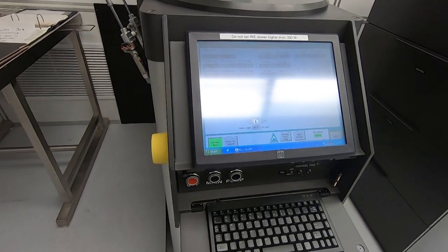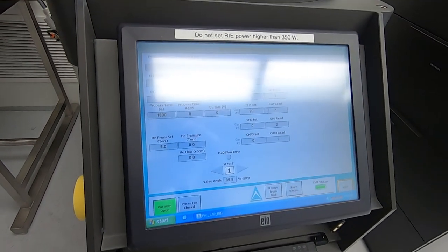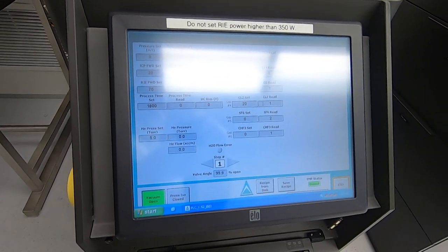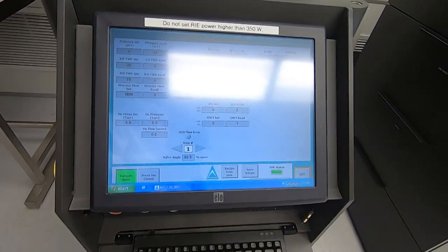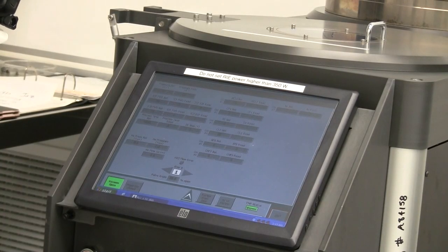So boron trichloride is actually delivered to this tool at minus 10 psi and that helps it, that prevents it from condensing to a liquid and just messing up your processes. So that was just a real boon for us and saved us a great deal of money just to run the boron trichloride through sub-atmospheric regulators.